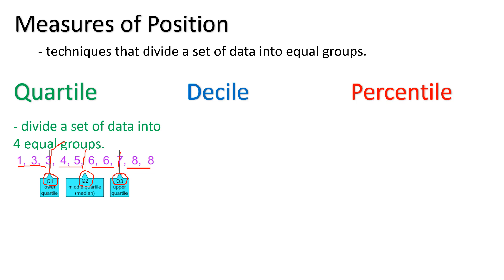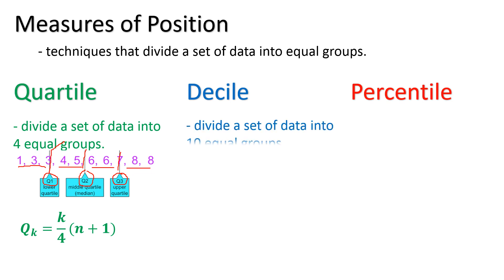If we are going to compute for a quartile's position, we use the formula: quartile class equals k over 4 times n plus 1. For the decile — from the root word 'deci' — this divides the set of data into 10 equal groups. Quartile has 4 equal groups, while decile has 10.